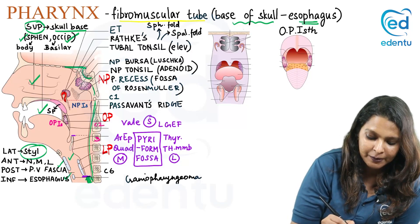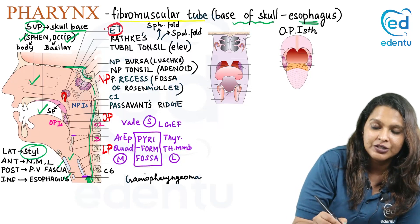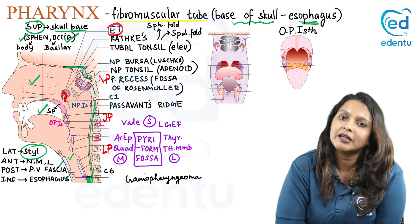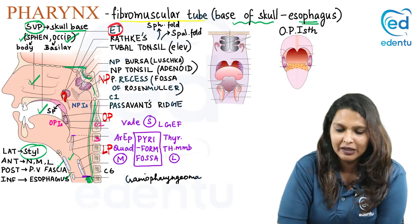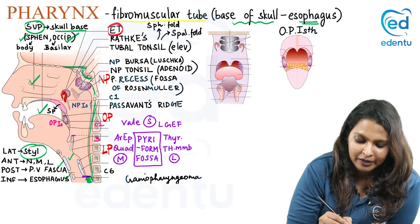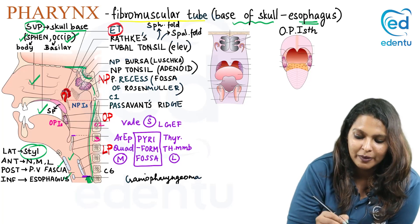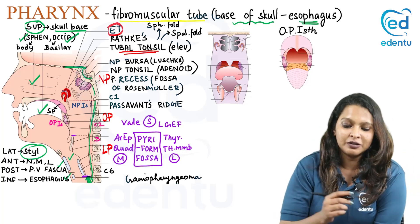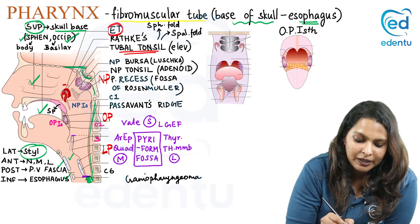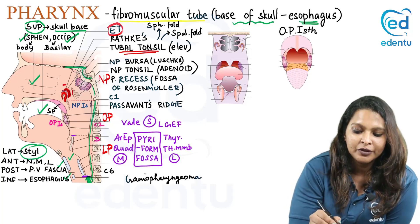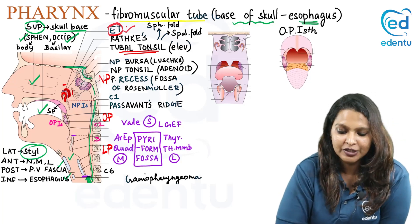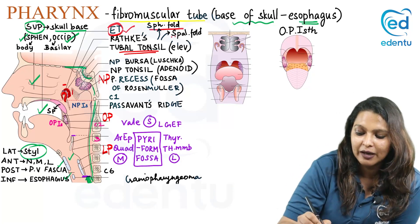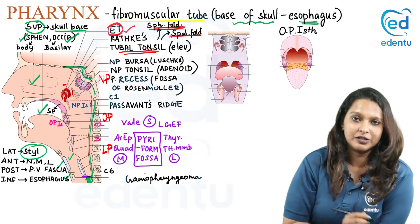On the lateral wall of the nasopharynx, there is the opening — the pharyngeal end — of the eustachian tube. The eustachian tube connects the nasopharynx to the middle ear cavity. On top of it you can see the tubal tonsil, which causes an elevation. The tubal tonsil is present on the superior and posterior aspect of the eustachian tube opening and causes this elevation.